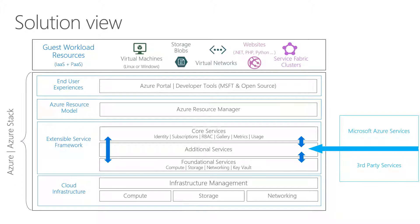All these things are clients for our Azure Resource Manager. Azure Resource Manager is some kind of an abstraction layer that offers a broad set of APIs to clients like the portal, PowerShell, and other libraries for a broad set of languages. Below Azure Resource Manager — which is exactly the same interface as we have in Azure — we have our Extensible Service Framework. This framework offers core services like identity, subscriptions, role-based access control, metrics, usage, and also optional resource providers like App Service, SQL, MySQL Adapter, and other providers that might show up in the future, like IoT Hub or Event Hubs.